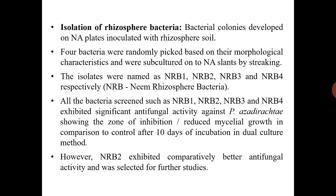Isolation of rhizosphere bacteria. Bacterial colonies developed on nutrient agar plates inoculated with rhizosphere soil. Four bacteria were randomly picked based on their morphological characteristics and were subcultured on nutrient agar slants by streaking. The isolates were named as NRB1, NRB2, NRB3 and NRB4, where NRB means neem rhizosphere bacteria.